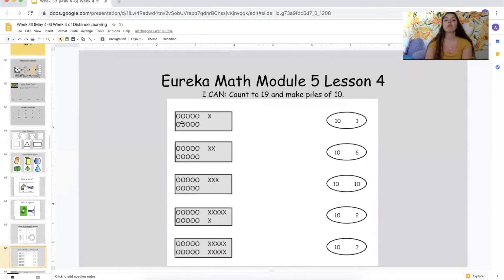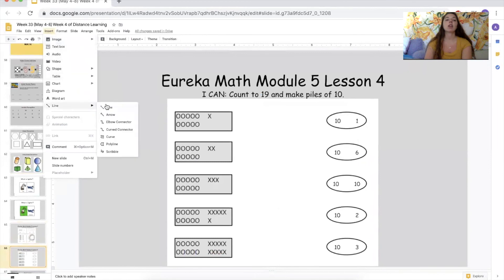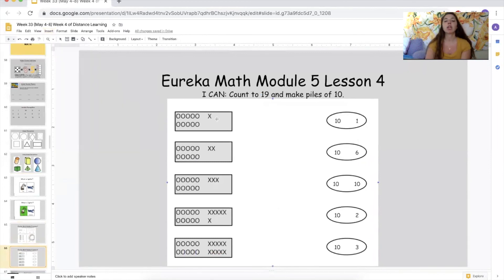Now we have to draw lines to match the 10s and their extra parts to the pictures. So look up here. We have a group of 10. The circles are 10. And how many extra do we have? Just one. So we're looking for a picture that says 10 and one. Let me get a line. Tell me which one it is. 10 and one. Here it is. See how we did that? We drew a line to the group of 10 and the group of one.